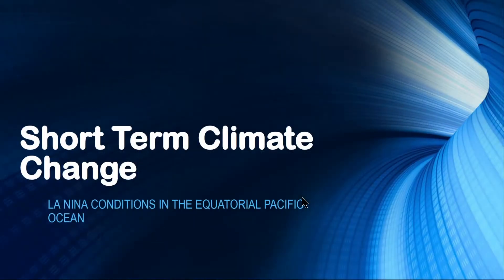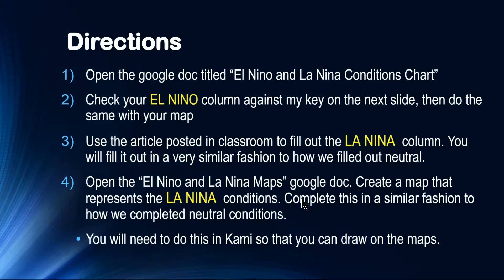El Niño and La Niña — quick recap. You learned about neutral, you learned about El Niño, and now you're going to do the last one, which is La Niña. The first thing you're going to do is check your El Niño column against my key on the next slide. You will see the chart, you will see the map, and you're going to make sure your answers are correct. On Tuesday of next week, you're going to be doing a graded assignment using your chart and map, so please make sure you have everything correct so you can use that appropriately.